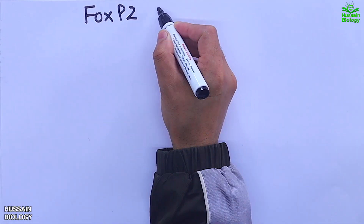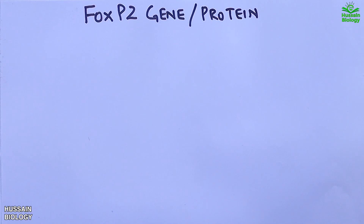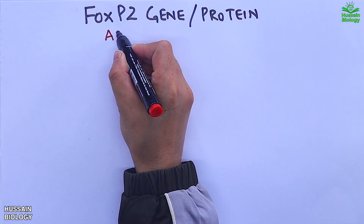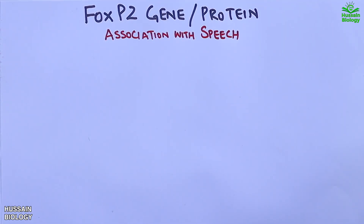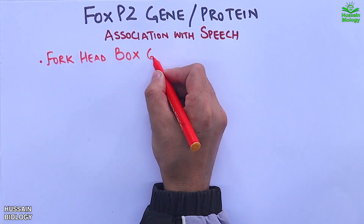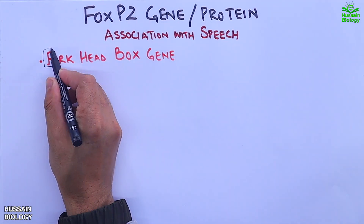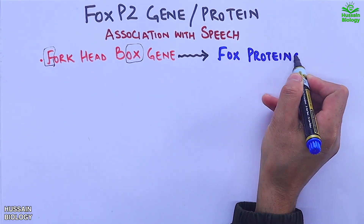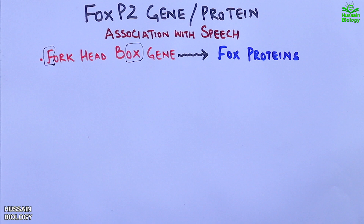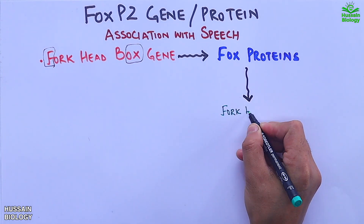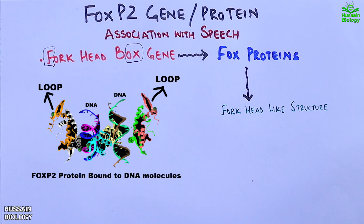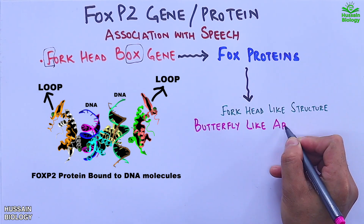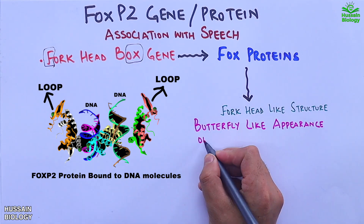In this video we'll be discussing the FOXP2 gene or protein and its association with speech. This FOXP gene is also termed as the FOX head box gene, which gives us different kinds of FOX proteins. These proteins have FOX head-like structures as depicted in the diagram, with loops of the domain having a butterfly-like appearance.